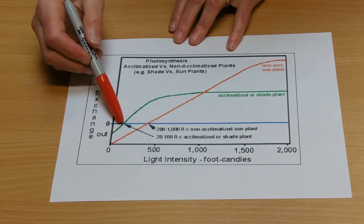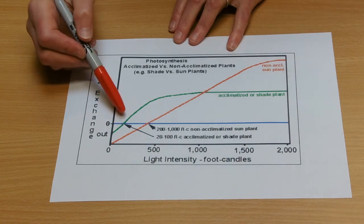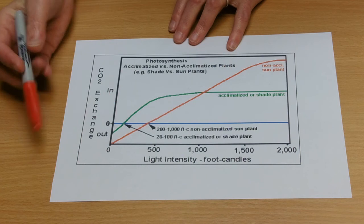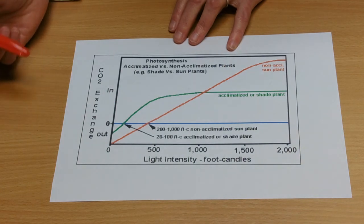And shade plants, of course, have lower compensation points because they need to be able to use those lower light intensities on the forest floor and the back corner of the office.